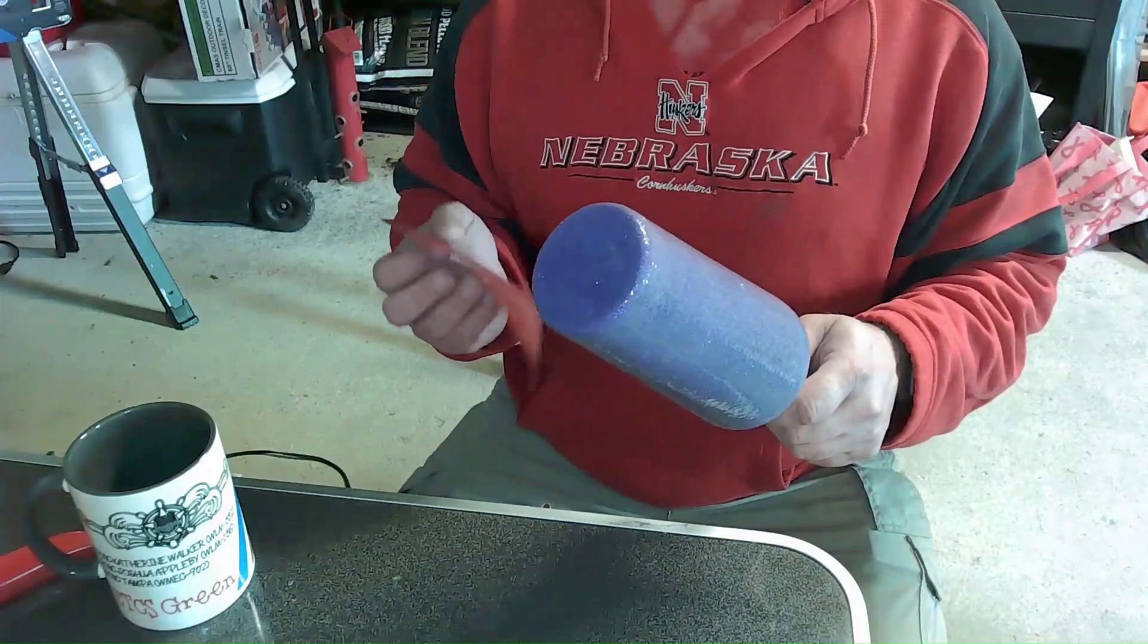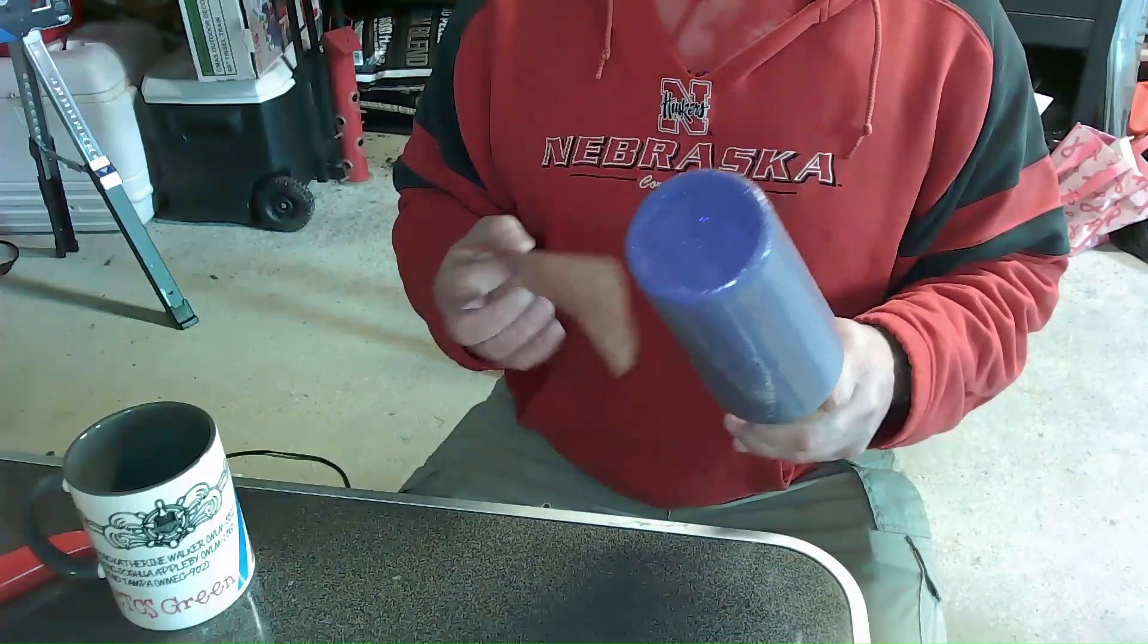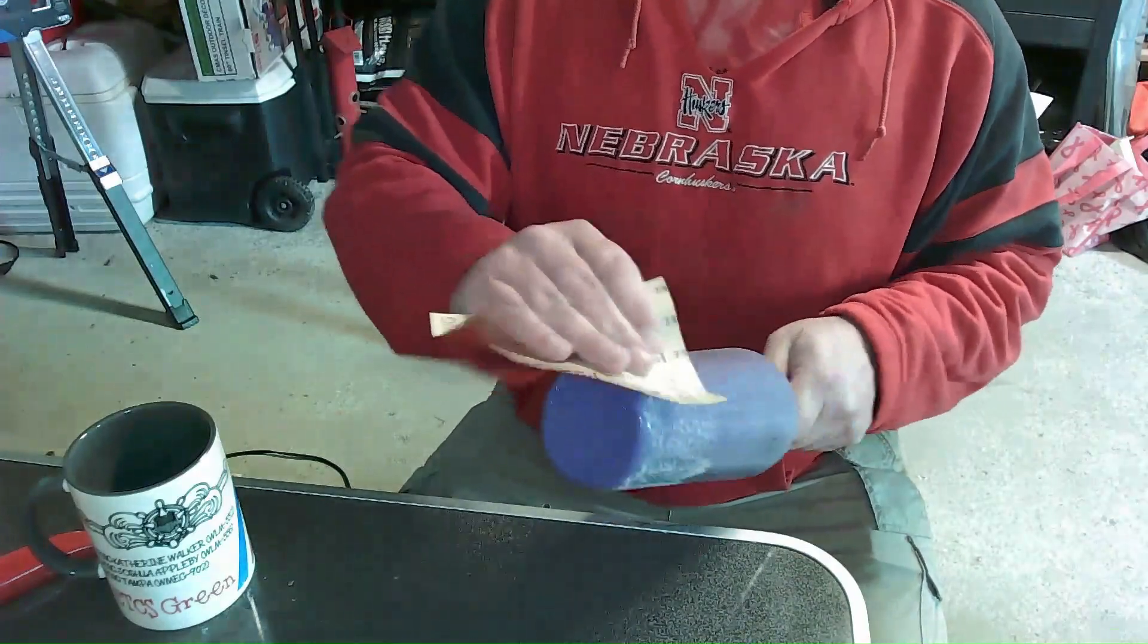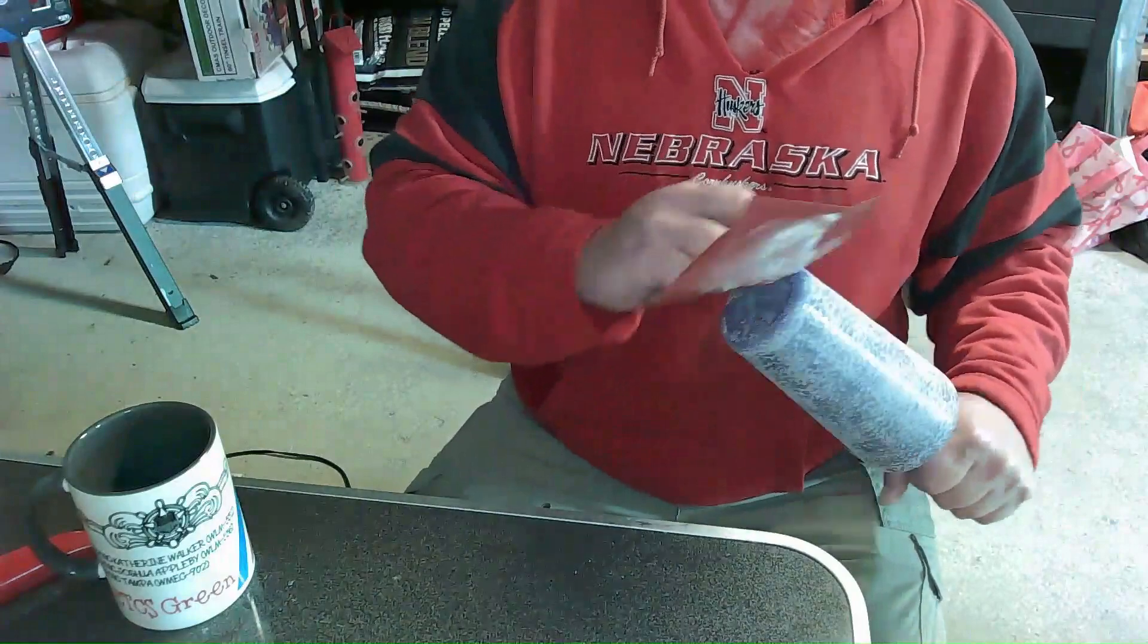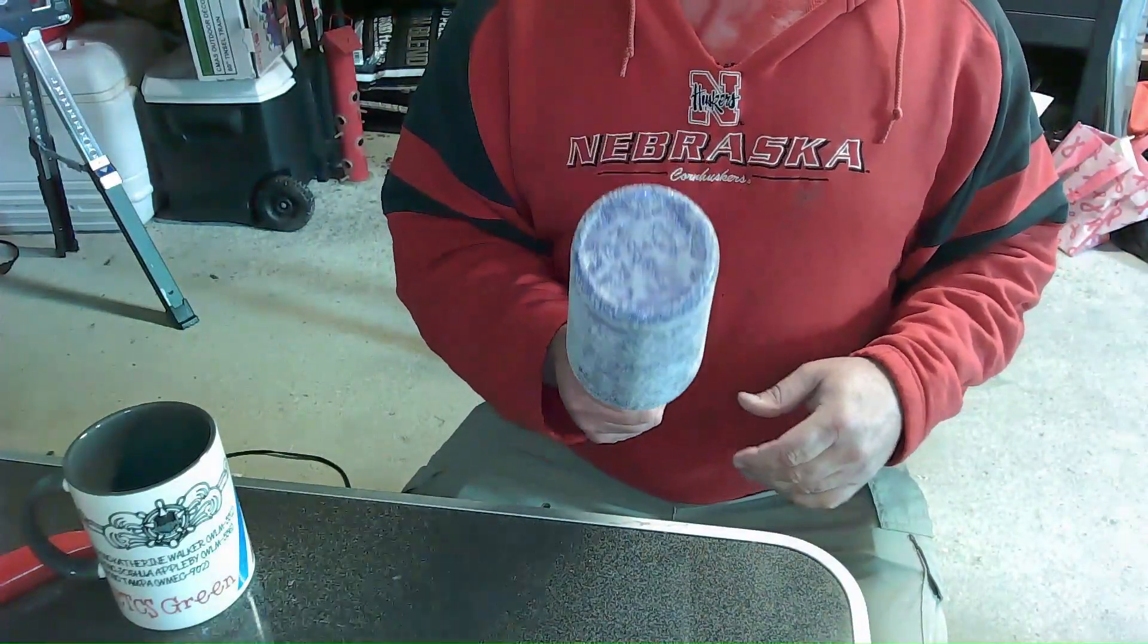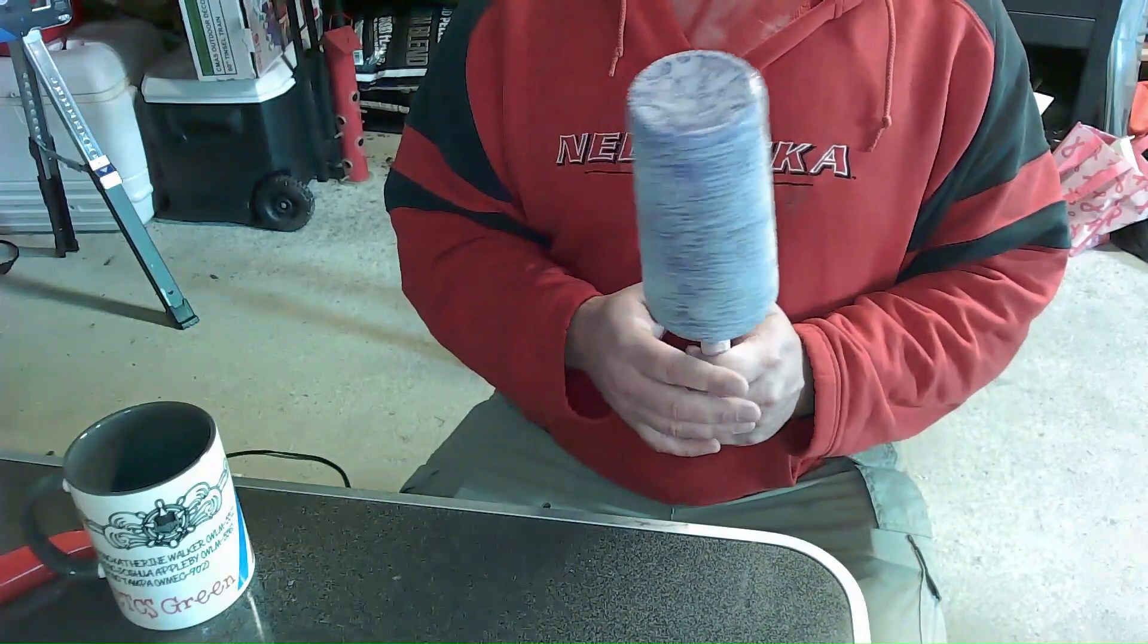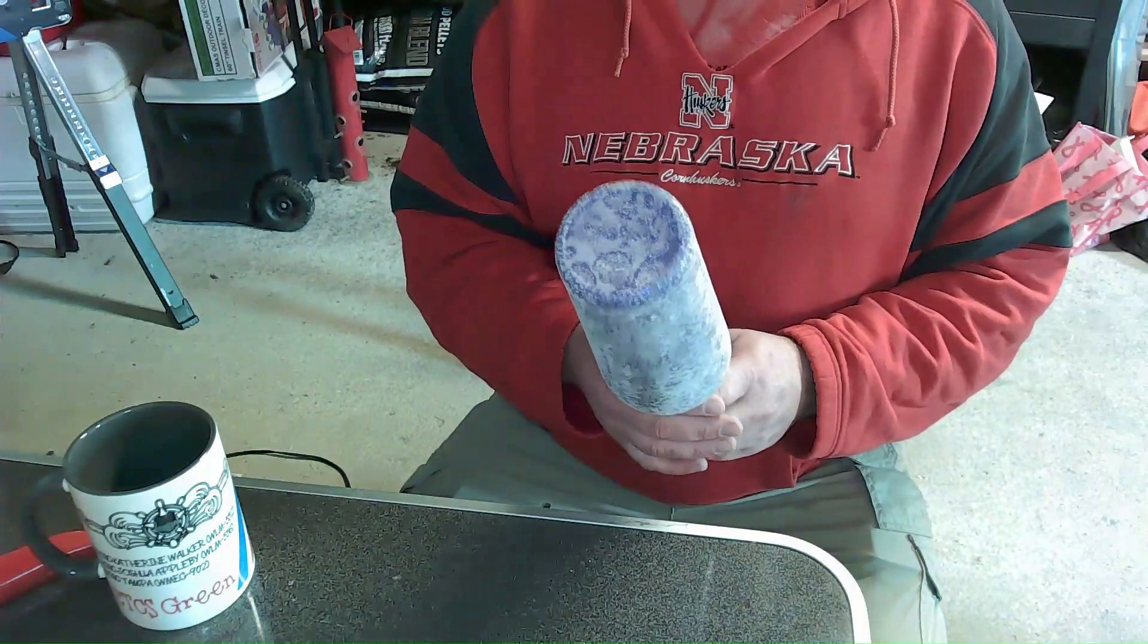So first things first, it needs a good sanding to smooth it all out and then it goes on the turner for the decals and epoxy. We're using 220 grit sandpaper, just going all over it. As you can see, it was relatively simple and it's just going to go over to the turner at this point. Doesn't take very long to sand it down.